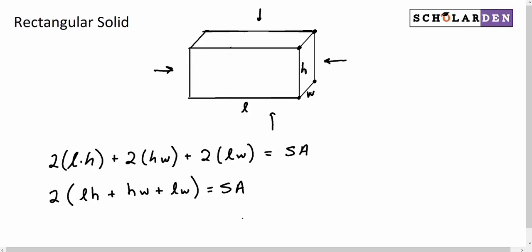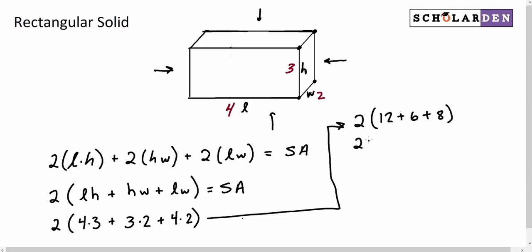So, let's say we knew that the length of this rectangular solid was four, the height was three, and the width was two. And we wanted to know the surface area. We could use this formula and just plug those numbers in. So, length was four. Height was three. Height three, width two. Length four, width two. And then, we'll take that up here. And we would have four times three is 12. Three times two is six. Four times two is eight. And then, we have 12 and six is 18 plus eight is 26. Two times 26 is 52.